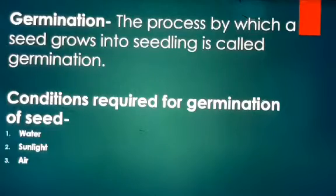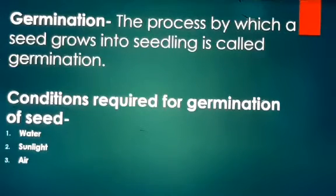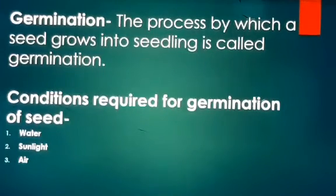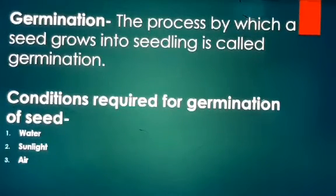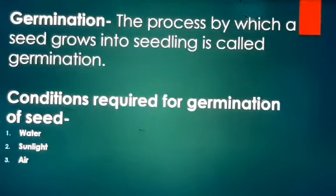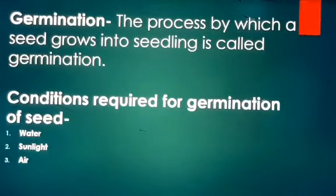During germination, the outermost layer — the seed coat — absorbs water. Due to the absorption of water, the seeds start growing in size. As a result, the seed coat becomes soft and bursts, so the seed opens. Along with that, water changes the stored food inside the seed into soluble form, and that soluble food is utilized by the developing embryo for its growth.